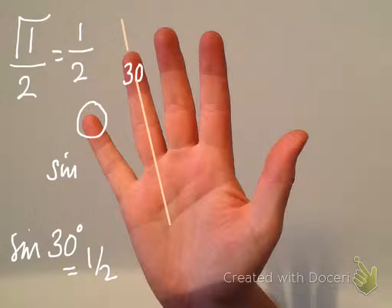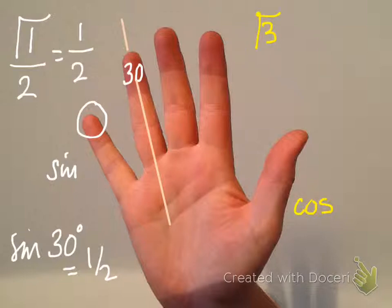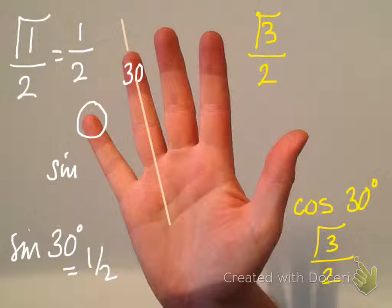You almost get a double angle for free here — over on the cos side, we're still at 30. How many fingers have I got on the right side? Three. I square root that number and divide by 2. So the cosine of 30 is root 3 over 2 — and yes, it is.